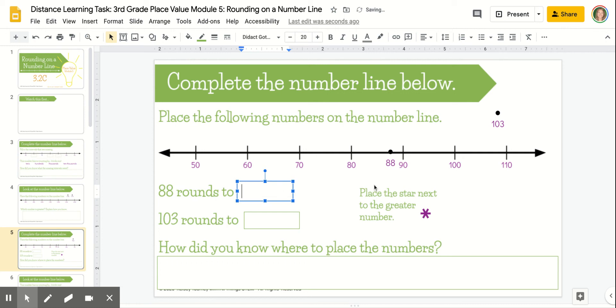You're going to repeat that process for each number as you go through. Once you've rounded both numbers, you'll take this star and place it next to the number that is greater.